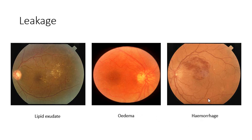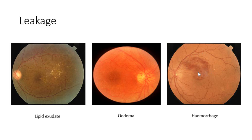Hemorrhage is shown in the final image on the right. This occurs when a blood vessel bursts or leaks, and here the hemorrhage is spread all across the superior part of the retina — you can see it's just blood showing the hemorrhaging there.